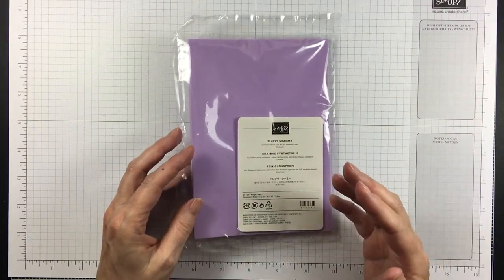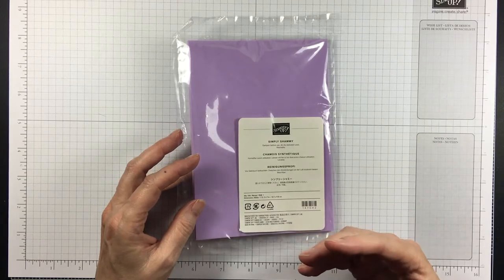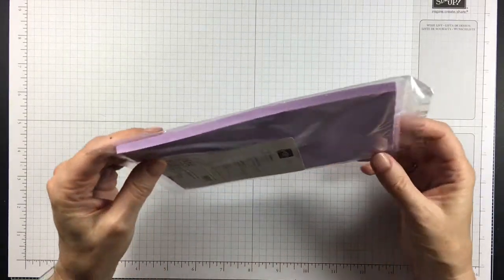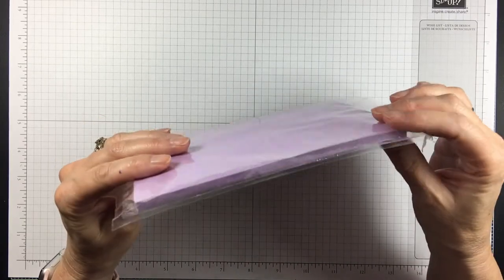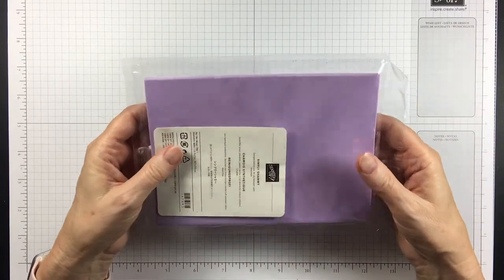I was really confused because I heard it was a chamois and I expected a very thin cleaning cloth. And I had no idea what we were supposed to do with it because you can see it's thick and it looks like a piece of foam.